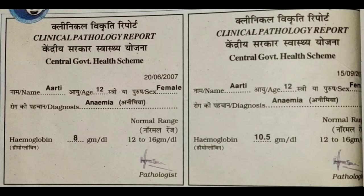Now students, see the last topic for today. You can see the clinical pathological report at page number 17 in your book. The report is for a girl named Aarti, age 12, female. The diagnosis shows she is suffering from anemia. The normal range of hemoglobin in our blood should be 12 to 16 grams.